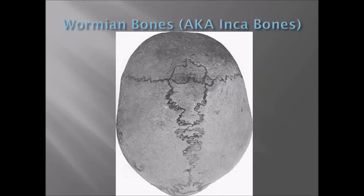Massive wormian bones, also known as inca bones, can also appear up in the Bregma area - where the coronal suture meets the sagittal suture. You can see these very busy suture lines that eventually split and have bones form within them. Here is a typical inca bone down at the lambdoidal suture.